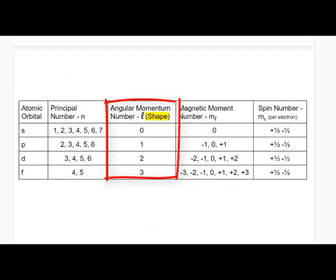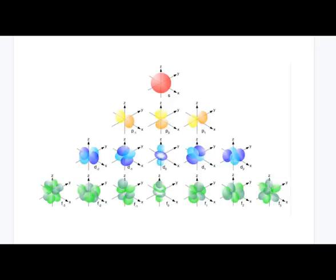Next, let's talk about the angular momentum number L — practically speaking, that's the shape quantum number, meaning the shape of space around the nucleus. The L quantum number for S is zero, for all three P orientations it's one, for D it's two, and for all seven orientations of F it's three. We can summarize as: zero, one, two, and three.